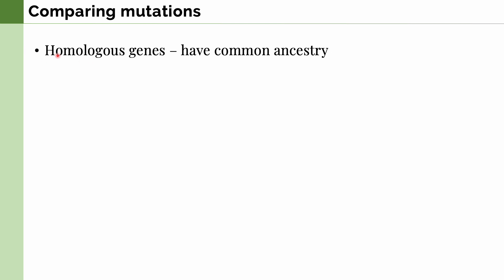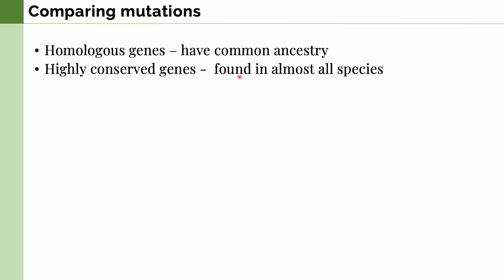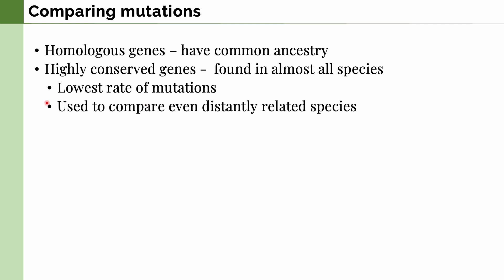Now that we have discussed these different sources of genetic variation, let's talk about some applications. The most common is to compare mutations by looking at homologous genes — genes with a similar function because they have a common ancestry. There are two main types: first are highly conserved genes, found in almost all species. These genes are essential for cellular processes like translation and DNA replication, so they have the lowest rates of mutation and can be used to compare even distantly related species.